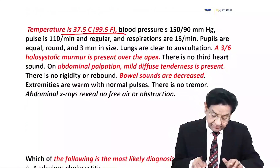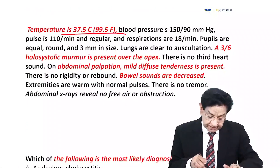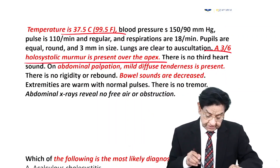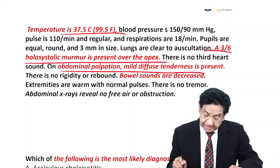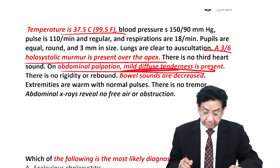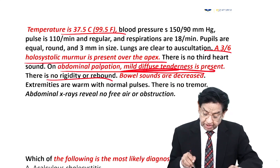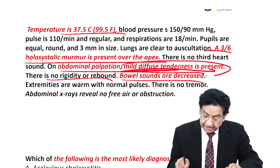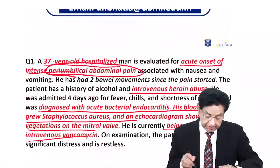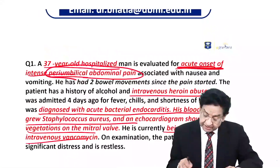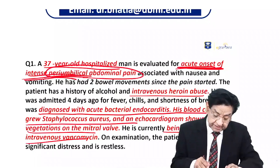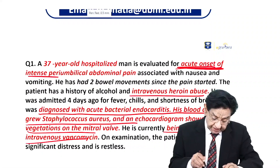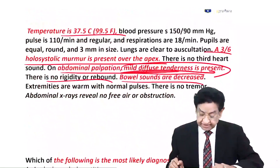He has fever and a 3/6 holosystolic murmur over the apex. Abdomen palpation reveals mild diffuse tenderness, no rigidity, no rebound, and bowel sounds are decreased. The key point to note is that he has only mild diffuse tenderness, although he presented with severe acute onset intense pain — the intensity of pain is very, very high but tenderness on palpation is very minimal.